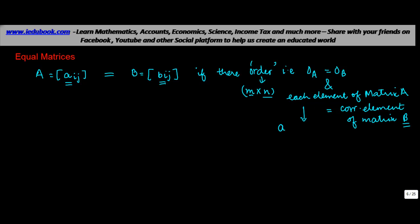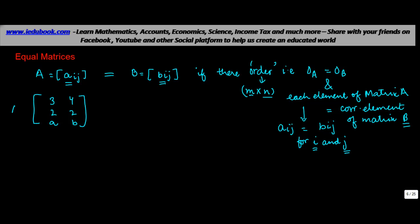Symbolically this is referred to as Aij equals Bij for all I and J. For example, let's say matrix A is written as 3, 2, A, 4, 2, B and matrix B is similarly written as 3, 2, A and 4, 2, B.